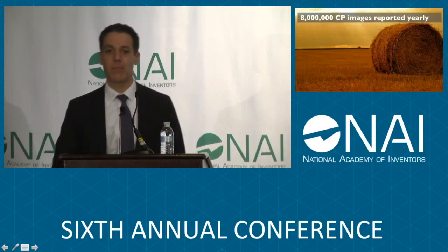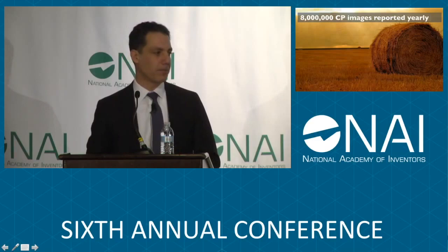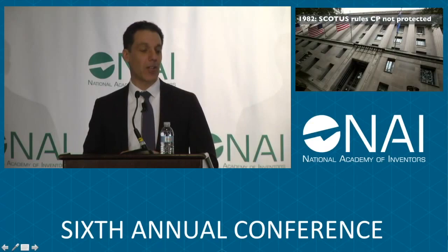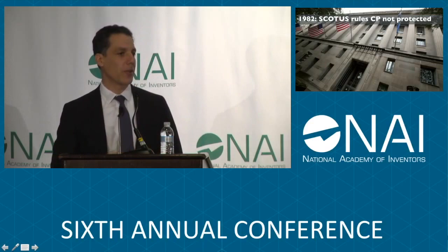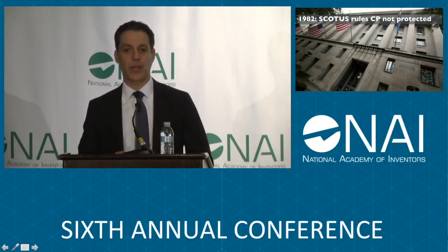I'd like to focus on this number — 8 million reports of child pornography — and it's helpful to have historical context to understand how we got to such a staggering amount being transmitted around the Internet. Prior to 1982, child pornography in this country was legal — it was protected speech. In 1982, the Supreme Court of the United States banned child pornography because of the harm it brought to the children involved in the creation of this content.